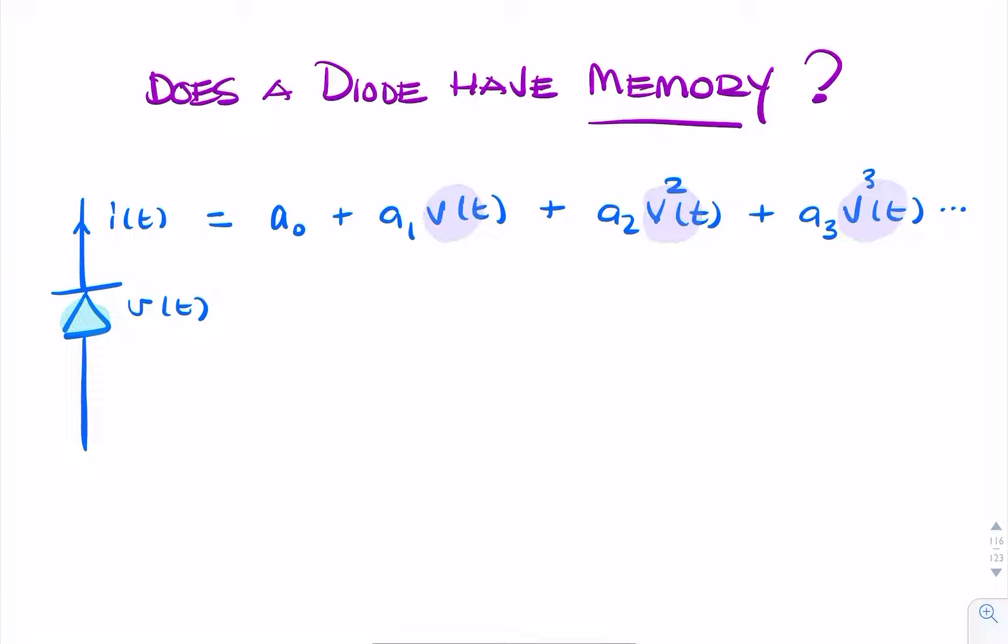So we can rewrite this, we can say the current as a function of time is a summation k equals 0 to infinity a k times v to the power k of t.